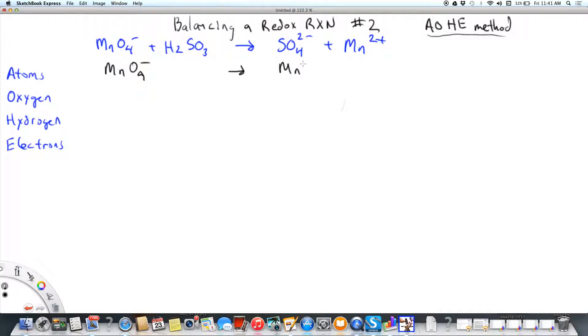So first of all, I want to see if my atoms that are not oxygen or hydrogen are balanced. So I have one manganese on the left and one on the right. So it's already balanced.